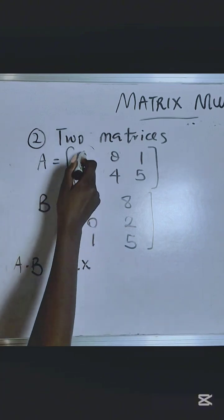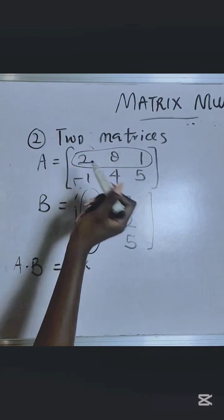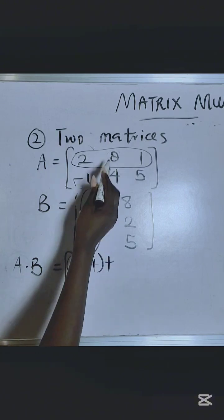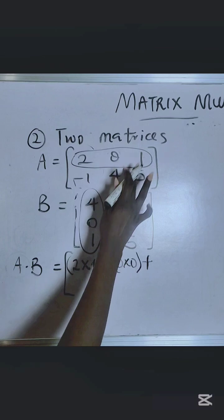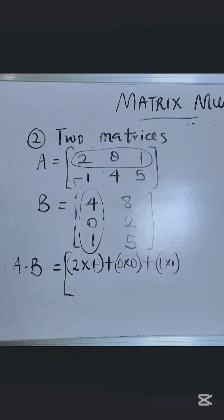So right now, you have to pick the first row and then multiply with the first column. So you say 2 times 4 plus 0 times 0 plus 1 times 1. And then when you're done with that, you move on.